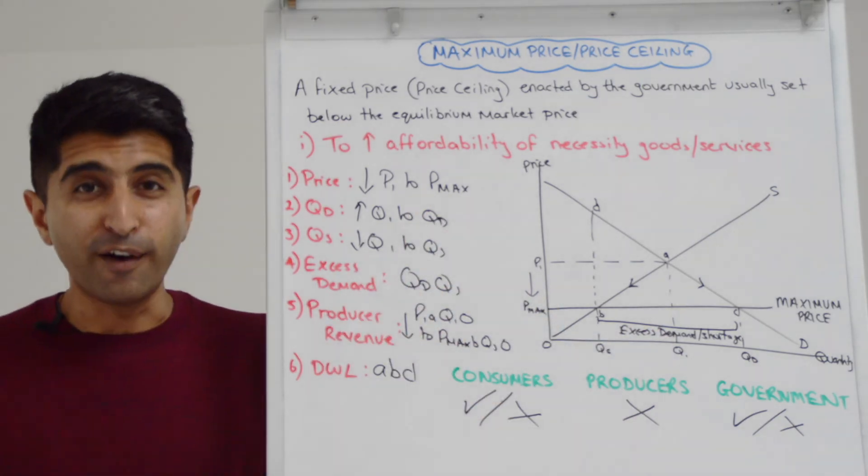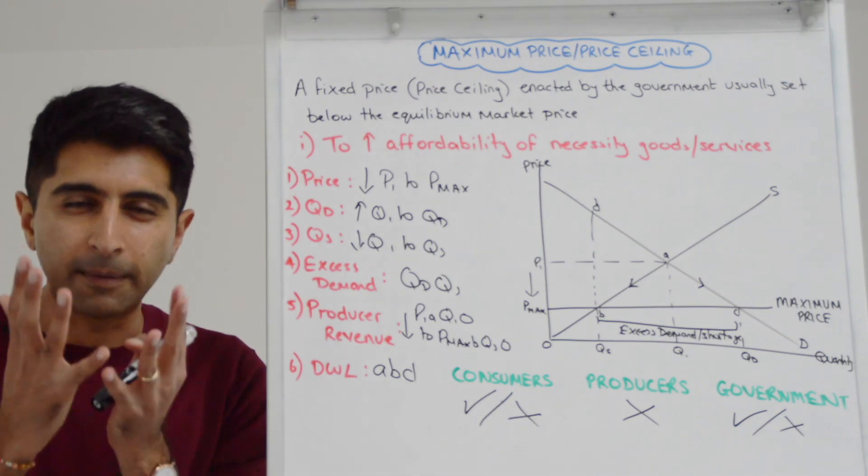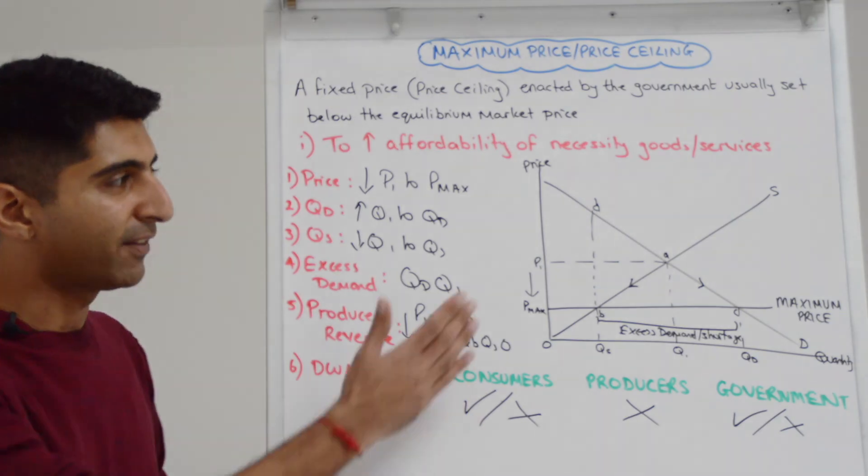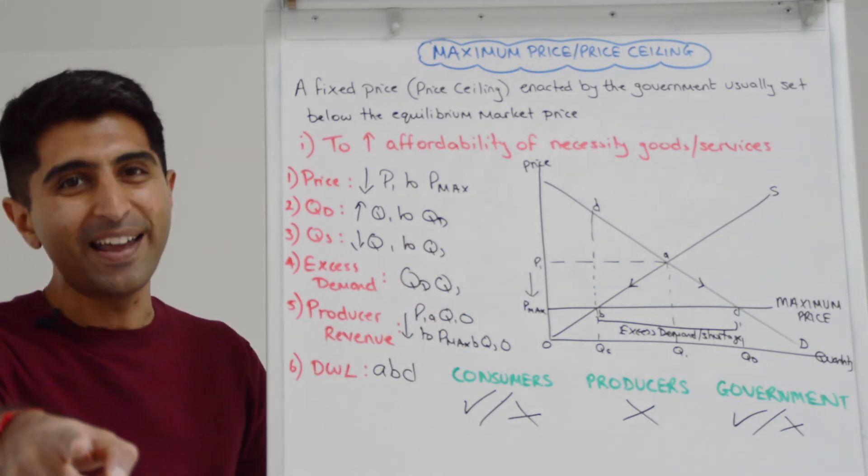So we can see noble intention of a maximum price, but the actual workings in the market can be quite dangerous. Our government needs to be mindful of that. We can understand that now given this detailed diagrammatic impact of maximum price. So that's it. Thank you so much for watching guys. I'll see you all in the next video.